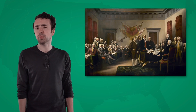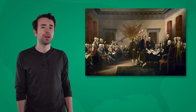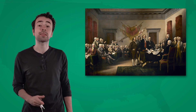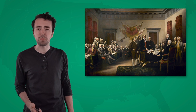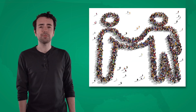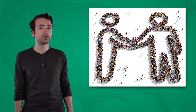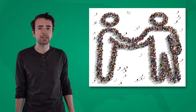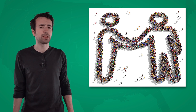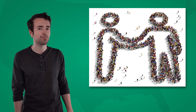The founders of the United States believed contracts were pretty important, too. They referenced them in important documents like the Declaration of Independence and the Constitution. Today, we'll talk about how their idea of a social contract led to many of the rights people in the United States have today, as well as some of the responsibilities that may come with those rights.